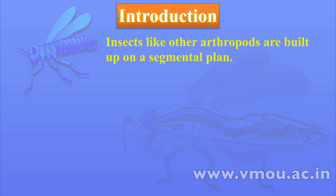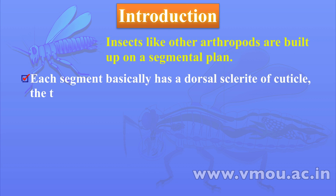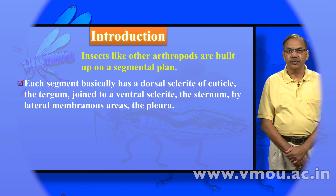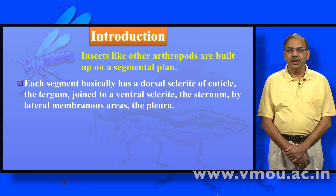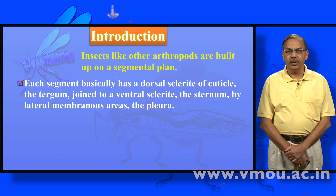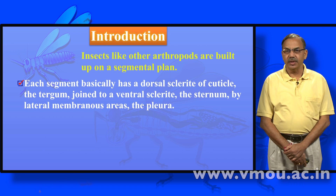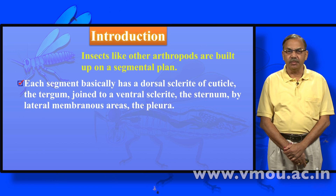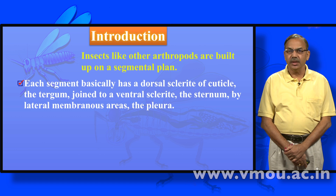Thorax has got three appendages in the form of legs, and the abdomen with ten segments having an anal side and the second-last segment with the genital armature. Insects, like other arthropods, are built upon a segmented plan. Each segment basically has a dorsal sclerite of cuticle. If you see the segment in transverse section, there is a dorsal sclerite called the tergum, joined to the ventral sclerite known as the sternum, and a lateral membranous area.